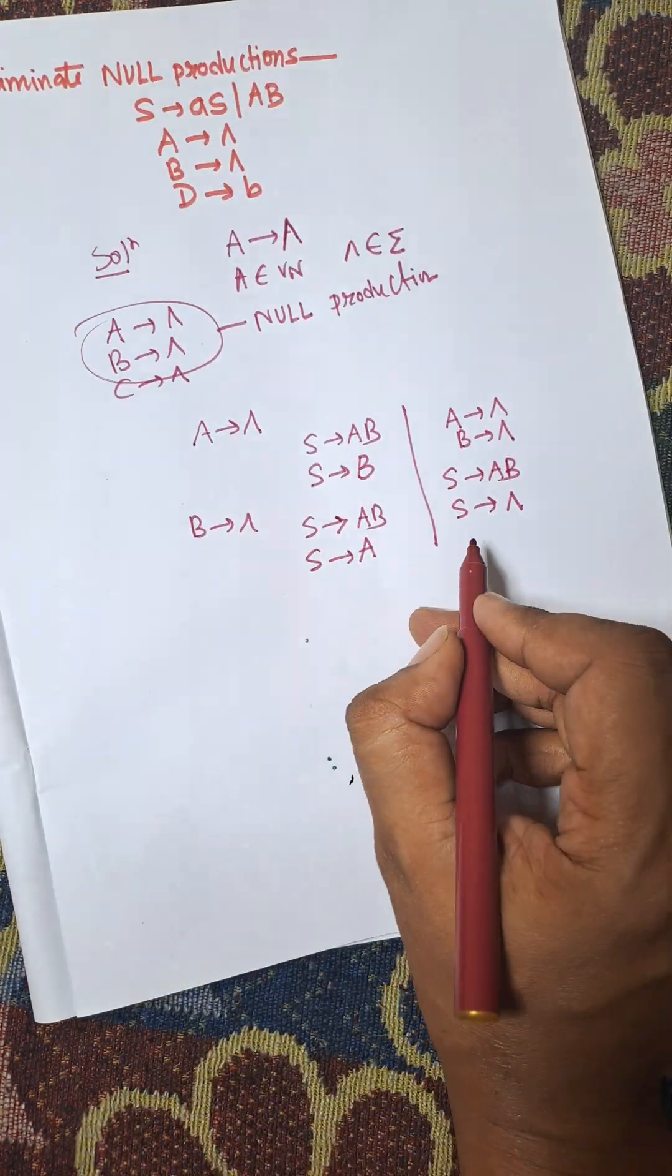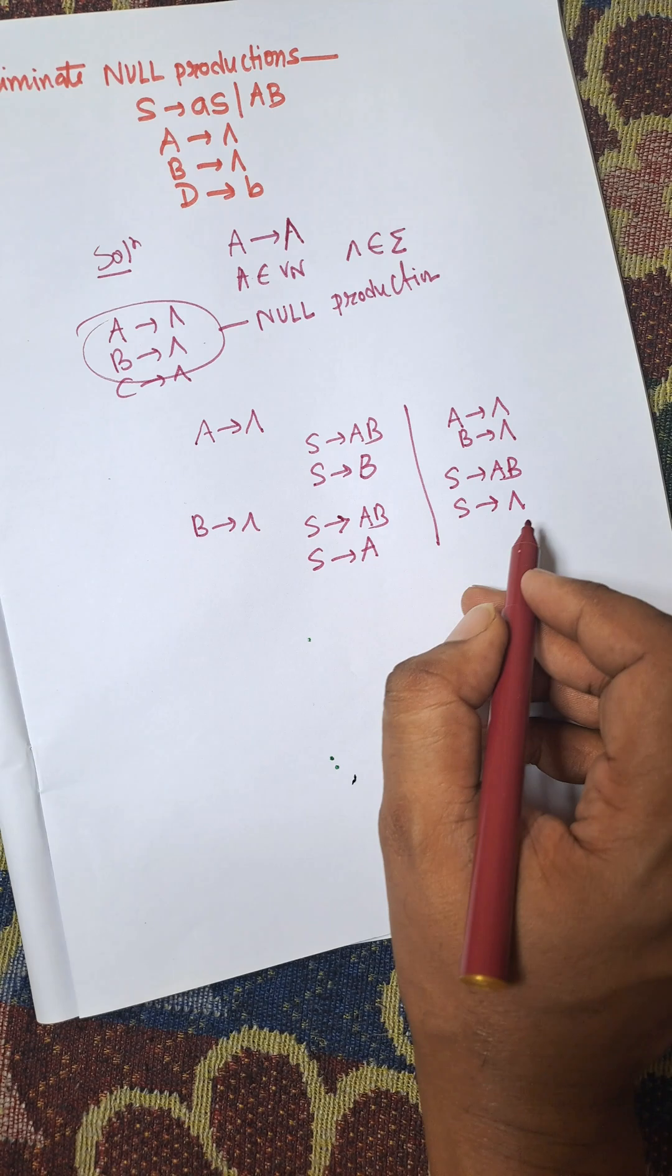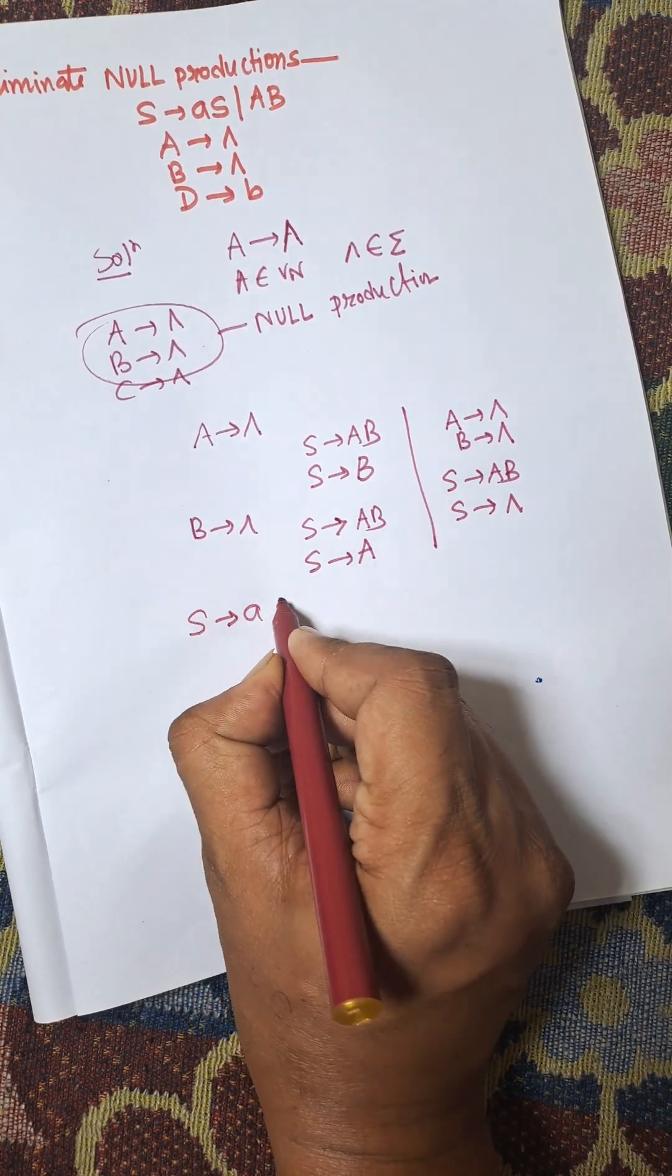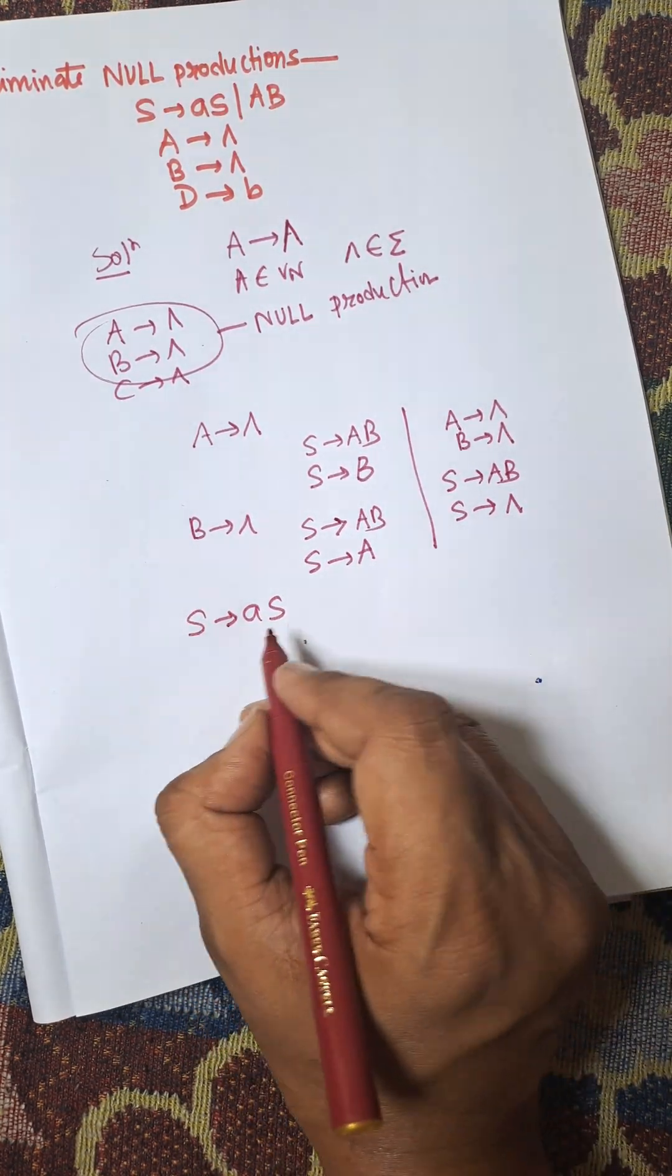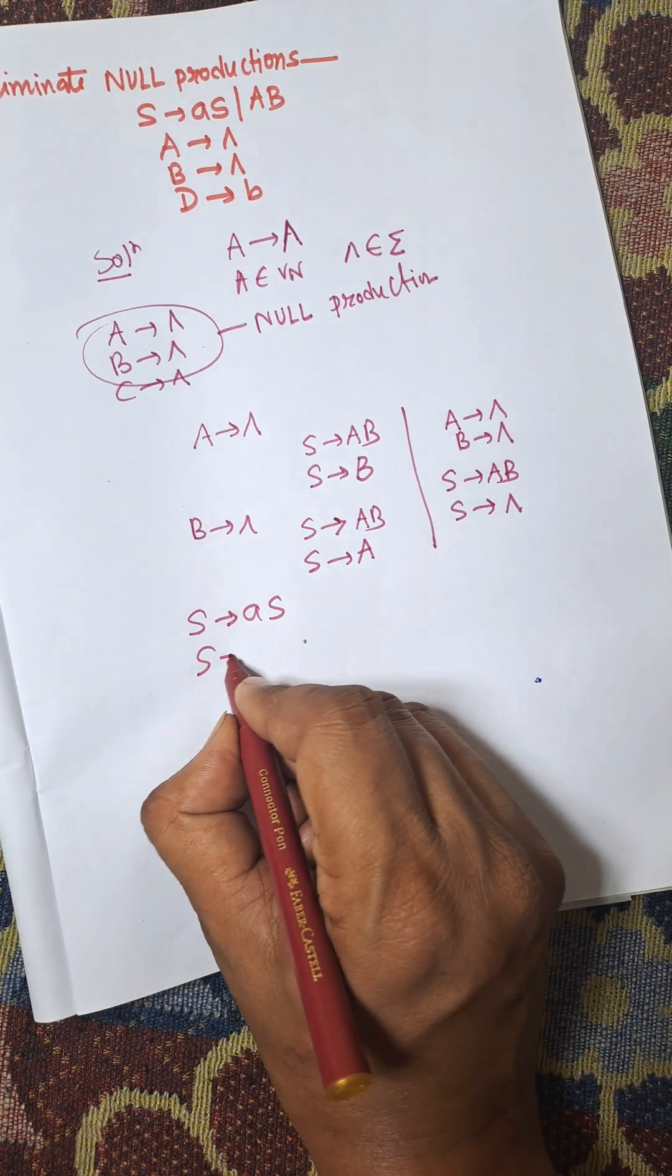Now S to empty is a null production. We need to remove this one. Here, when we put the values of empty in S, we will get S to A.